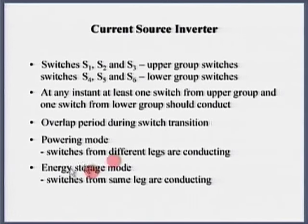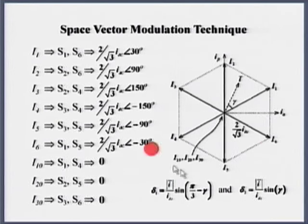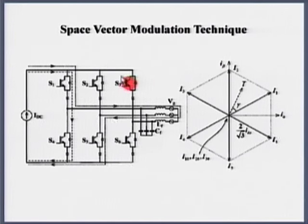In the powering mode, overlap period during switch transition. So this switch transition is also known as the energy storage mode. This is the space vector representation of the current source. What is similar to the voltage source? It approximately looks approximately the same. These are the vectors that we can get, and there I said T1 and T2. Here I am saying delta 1 and delta 2. See here, S1 and S5 - this is the powering mode.